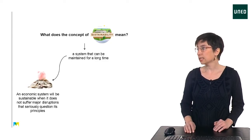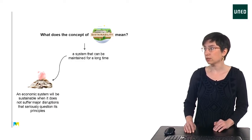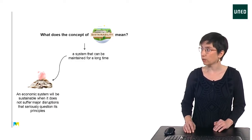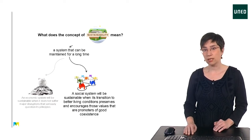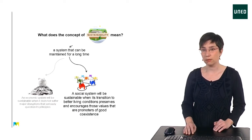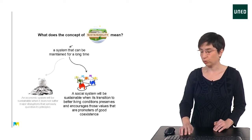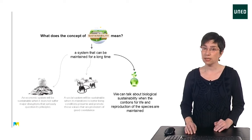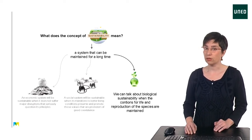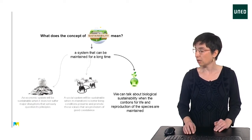An economic system will be sustainable when it does not suffer major disruptions that seriously question its principles. A social system will be sustainable when its transition to better living conditions preserves and encourages those values that are promoters of good coexistence. And similarly, a biological system will be sustainable when the conditions for life and reproduction of species are maintained.